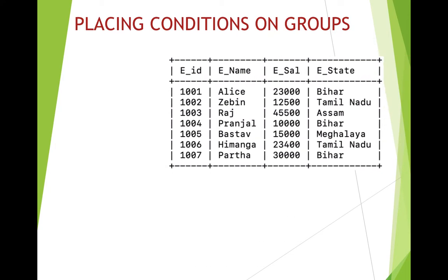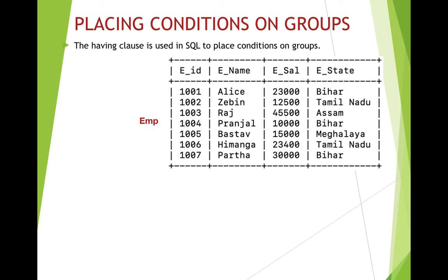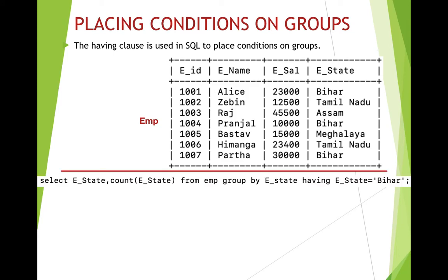Now let's say we want to place certain conditions on groups — for example, we only want to know how many persons are from Bihar. For filtering within grouping we use another clause known as the HAVING clause. The HAVING clause is used in SQL to place conditions on groups. For placing normal conditions without grouping we use WHERE, but with GROUP BY you use HAVING.